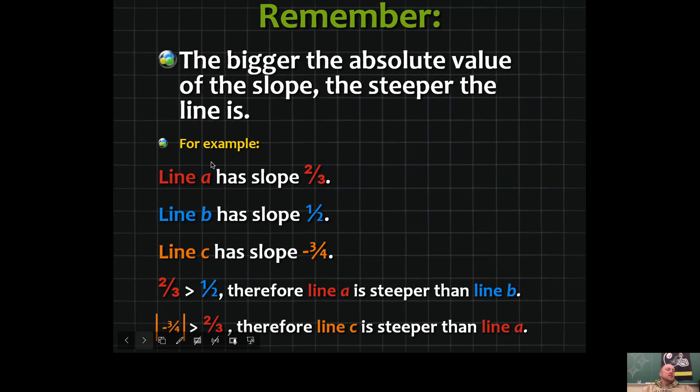For example, let's compare line a with line b. Line a has a slope of 2/3 and line b has a slope of 1/2. Two-thirds is bigger than one-half, so that means line a is steeper than line b.